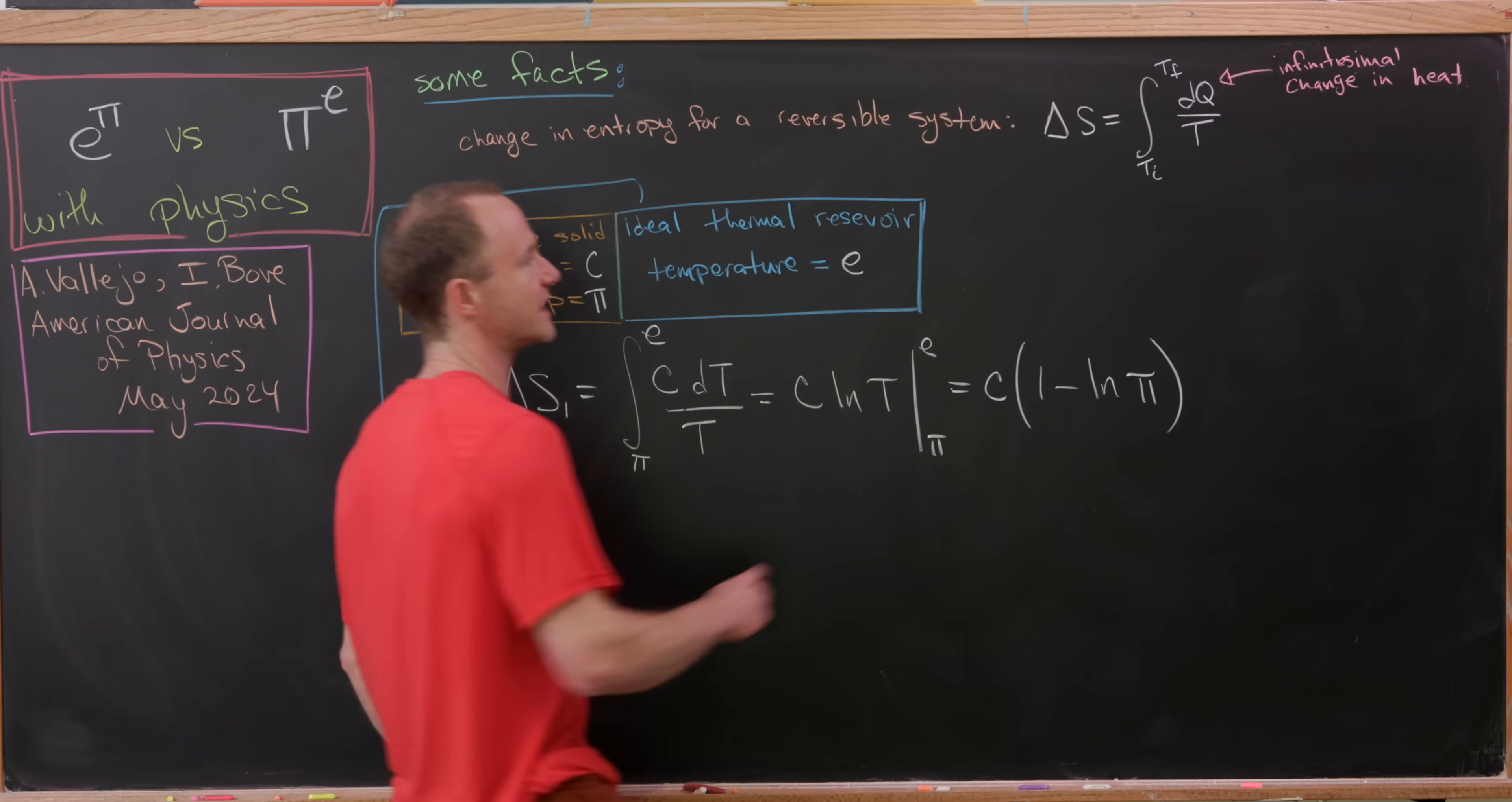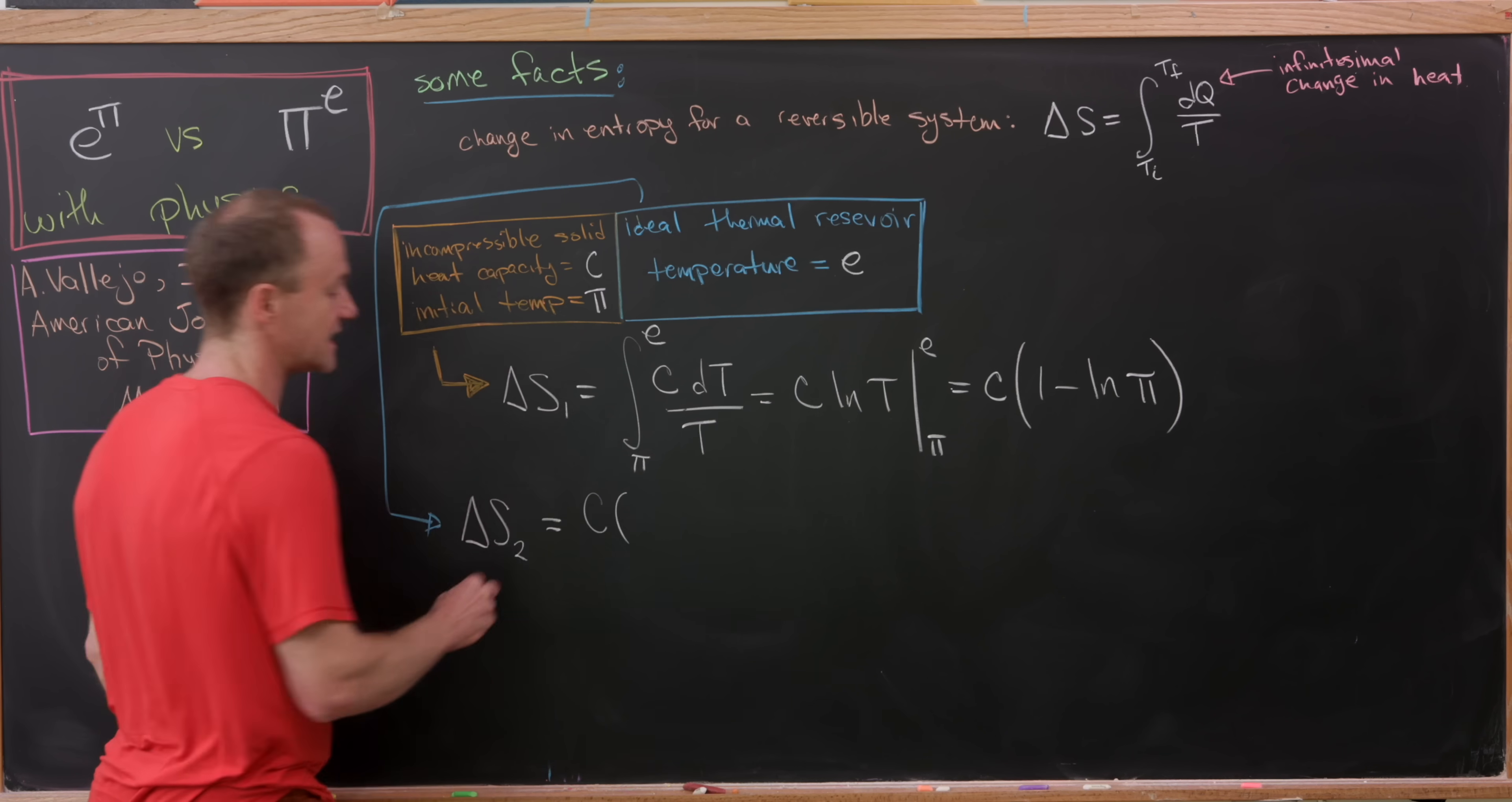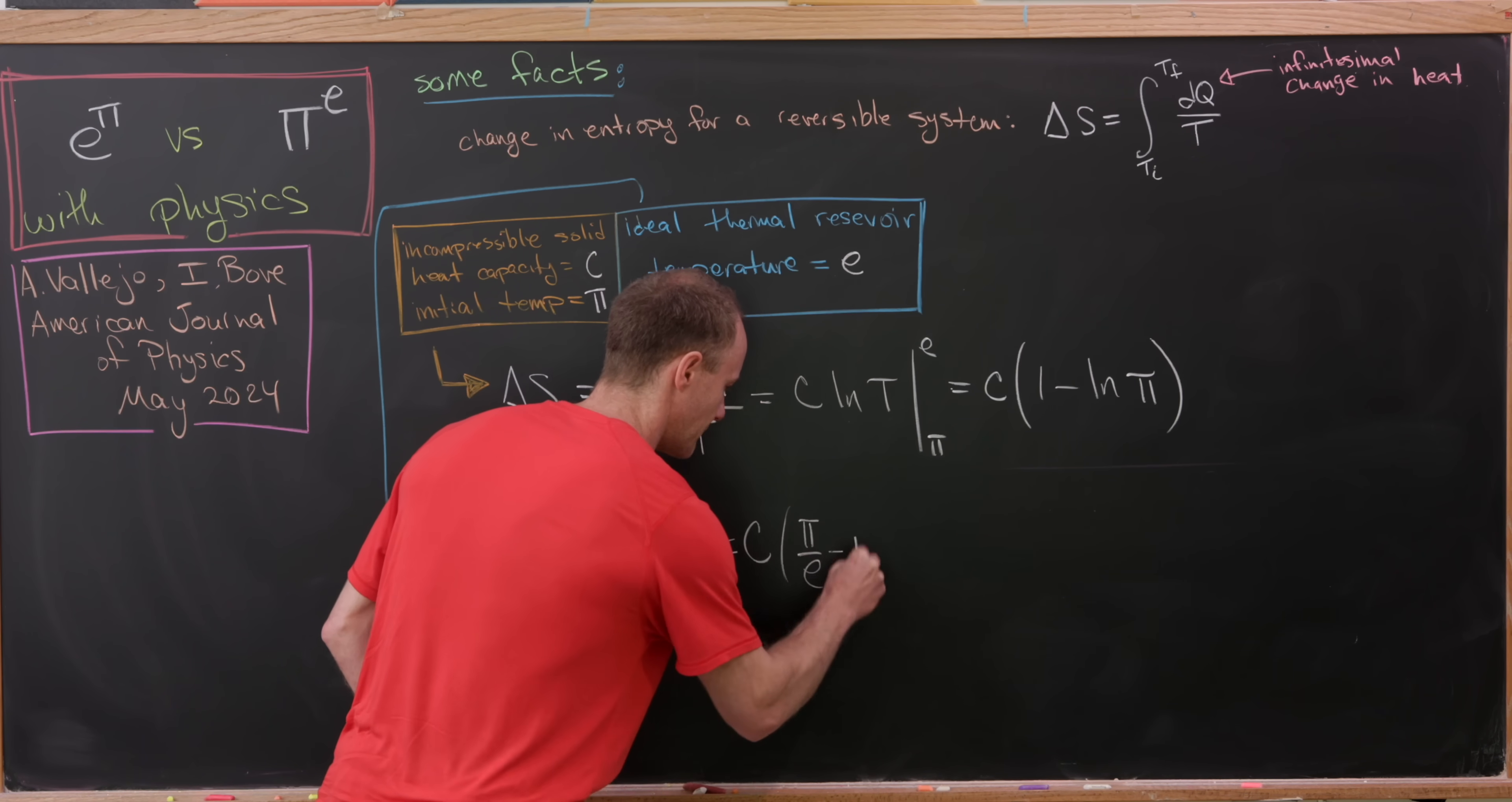And so what we're really doing is integrating this dQ, this infinitesimal change in heat. But this infinitesimal change in heat is really given by the heat capacity of the original solid and then its initial temperature and its final temperature. So putting that all together, we have a C times, let's see, it's going to be pi minus E all over E. That's our change in entropy for this system. Okay, but then notice that this can be calculated fairly easily. And that's going to give us C times pi over E minus 1.